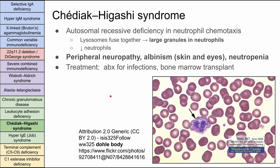Next, Chediak-Higashi syndrome. It's autosomal recessive — a deficiency in neutrophil chemotaxis. The lysosomes fuse together and create large granules in the neutrophils, called Dohle bodies, which are characteristic and should be recognizable on a blood smear. The neutrophils are low. Characteristic findings include peripheral neuropathy, albinism of the skin and eyes — white skin, white eyes, and reddish eyes — and neutropenia. Treatment is bone marrow transplant and antibiotics. Associate neuropathy, albinism, and neutropenia with Chediak-Higashi syndrome.